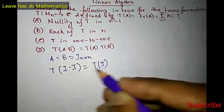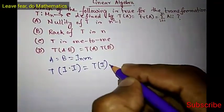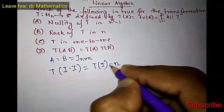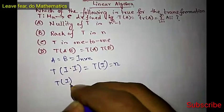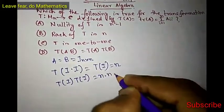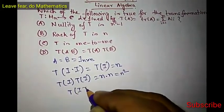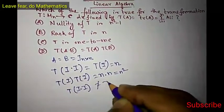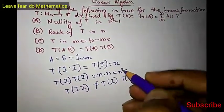Trace of I is n because the trace of the identity matrix is n. But what is T(I)T(I)? That is n times n, which is n squared. So T(II) is not equal to T(I)T(I) because n is not equal to n squared. So option D is false.